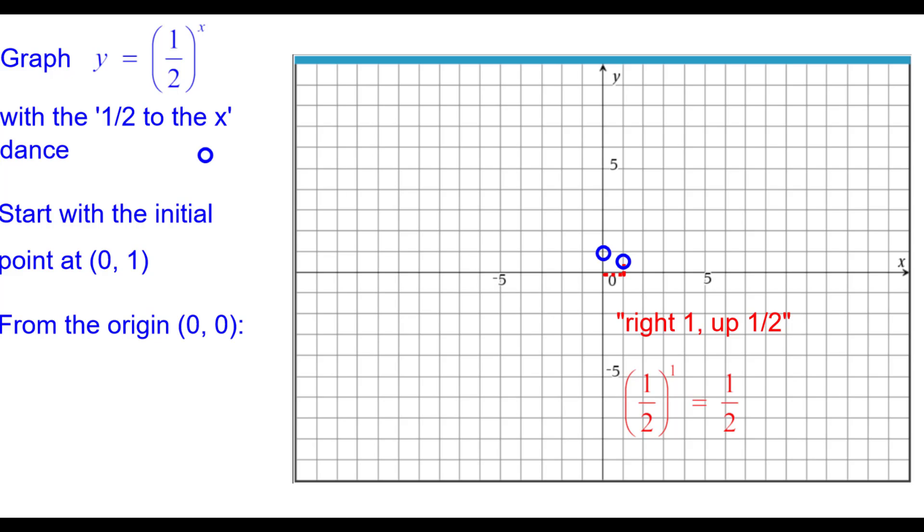Right 1 up a half because 1 half raised to the first power is 1 half. Right 2 up a quarter, a half squared is a fourth. And right 3 up an eighth, a half to the third power is 1 eighth.